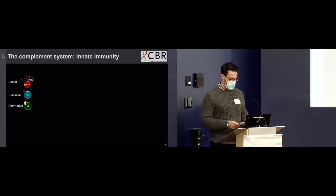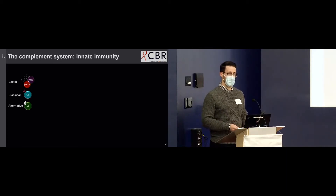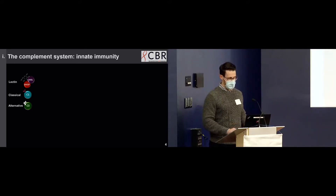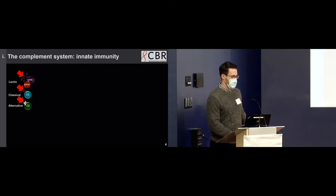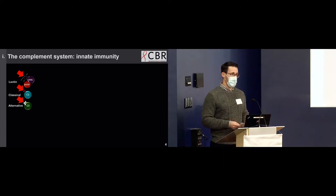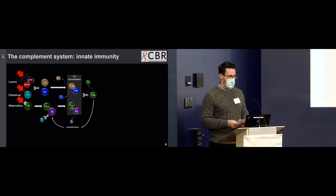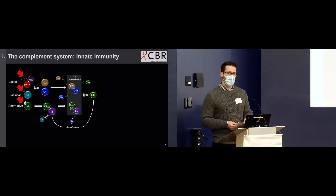The lectin pathway can be triggered primarily through the recognition of carbohydrates on the surface of microbial cells. The classical pathway is primarily triggered by pathogen-bound antibodies. And the alternative pathway is always somewhat active due to the spontaneous hydrolysis of C3 to a C3B-like molecule. Activation of these three pathways triggers the formation of C3-convertase complexes that begin generating C3B. C3B binds to the targeted cell membrane to facilitate leukocyte adhesion and phagocytosis.